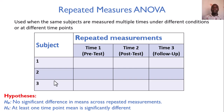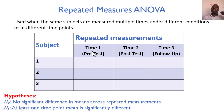Repeated measures ANOVA can also be a one-way repeated measures ANOVA, where besides the repeated measurements you have an independent categorical variable to assess whether it has an effect on the repeated measurements. It can also be a two-way or any-way repeated measures ANOVA.